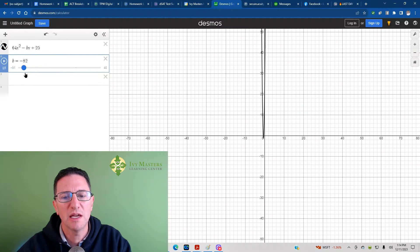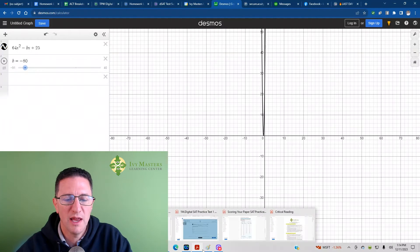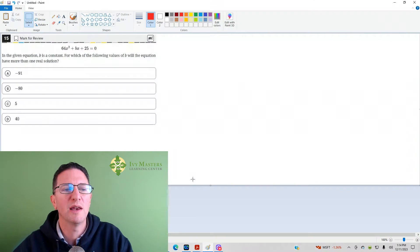It looks like it does not go through the x axis. You don't have more than one solution. A solution is an intersection point. Let's look at negative 91. Negative 80 was another option there. Negative 80 looks like it just kisses the x axis, one solution at negative 80. So you just bubble in negative 91 and move on.